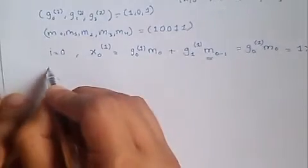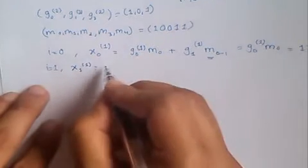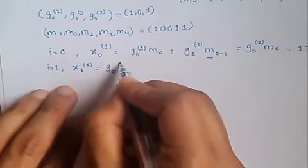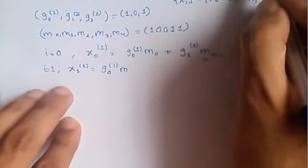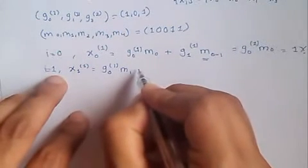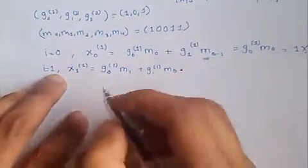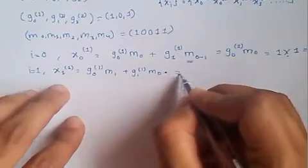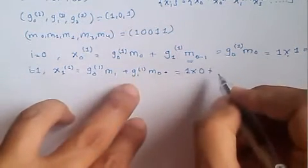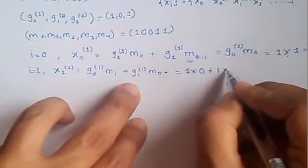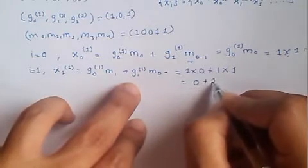Similarly for i=1: x1(1) equals g0(1) times m1 plus g1(1) times m0. The remaining terms are zero. So we get: g0(1) is 1 times m1 is 0, plus g1(1) is 1 times m0 is 1. That is 0 plus 1 equals 1.